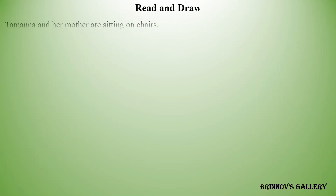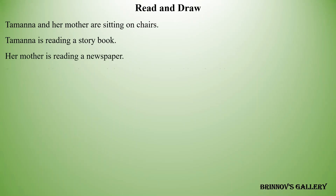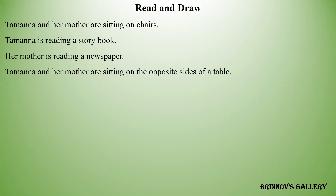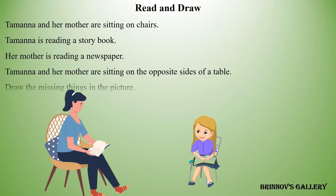Read and draw: Tamanna and her mother are sitting on chairs. Tamanna is reading a storybook; her mother is reading a newspaper. They are sitting on opposite sides of a table. Draw the missing things in the picture.